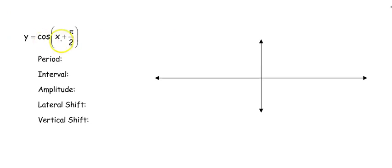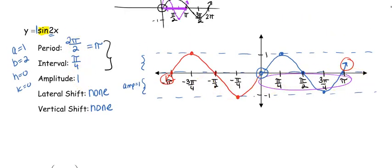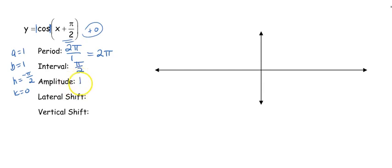Our next one: we've got cosine of (x + π/2). Our a value is 1, our b value is 1. Now we have an h value. Don't forget it's inside the parentheses, so it's the opposite of what we think. No number outside, so our k is going to be 0. So 2π divided by b — this time we're not going to change our period. Our amplitude is still 1. Now we have a lateral shift, which is that h value, and it's going to go left π/2. Make sure you tell me the direction you're going and how much. There was no k, so there's no vertical shift.